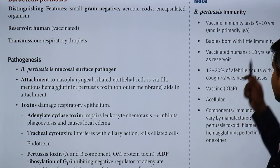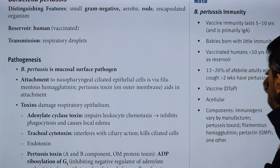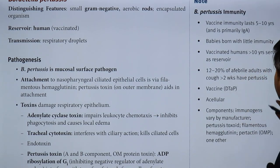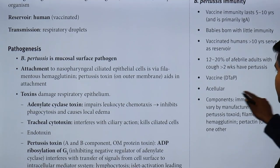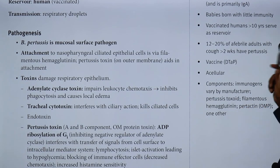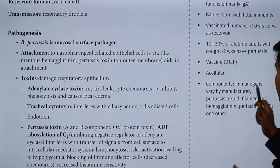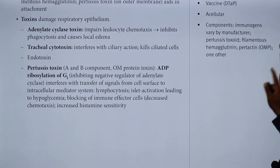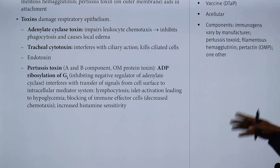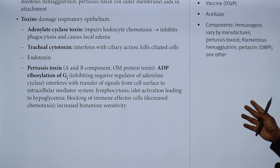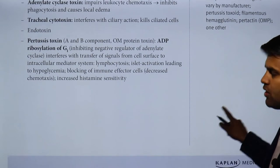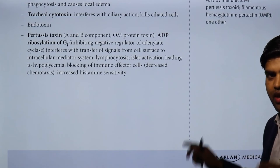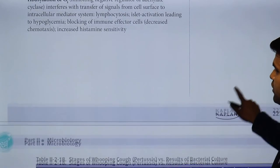The vaccine lasts for 5 to 10 years. Babies are born with little immunity. Vaccinated humans greater than 10 years serve as a reservoir. 12 to 20% of afebrile adults with cough greater than 2 weeks — you should think of pertussis. The vaccine is DTaP, this is the acellular pertussis vaccine. Component includes immunogens that vary by manufacturer — some include pertussis toxin, filamentous hemagglutinin, pertactin, and others. It depends upon which company's vaccine you are taking, and they will put one or another toxin in it.